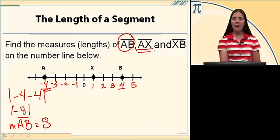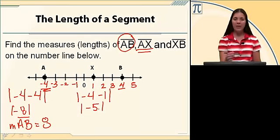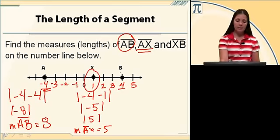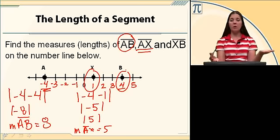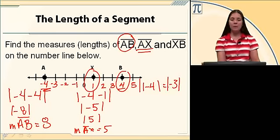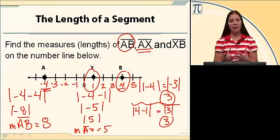To find the measure of AX, I do the same thing using points A and X: negative four minus one. Negative four minus one is negative five, and the absolute value of negative five is five. So the measure of AX is five. For XB, starting at X and going to B: one minus four gives me negative three, and the absolute value of negative three is three. Let's check: starting with B and going to X gives four minus one, which is also three. So I got the same answer — it doesn't matter what order as long as I take the absolute value of the difference. The most common mistake is with that double negative, so be careful with your negatives.